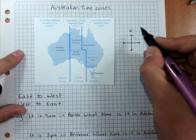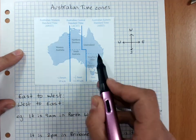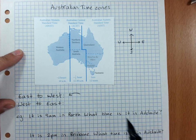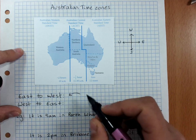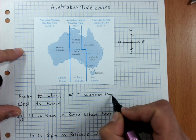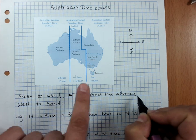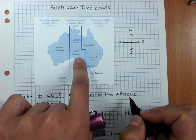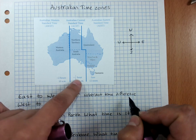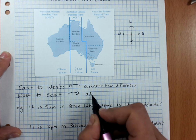A little reminder on the map: never eat soggy Weet-Bix. If we're going from East to West, that is going that way across Australia, then from East to West we subtract the time difference from our zone to get to the zone further West. So if I was in South Australia going to Western Australia, the difference is one and a half hours, so I'd subtract that. If I was going from West to East, I'd add the time difference.